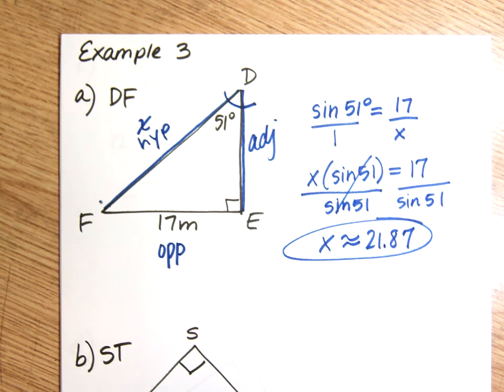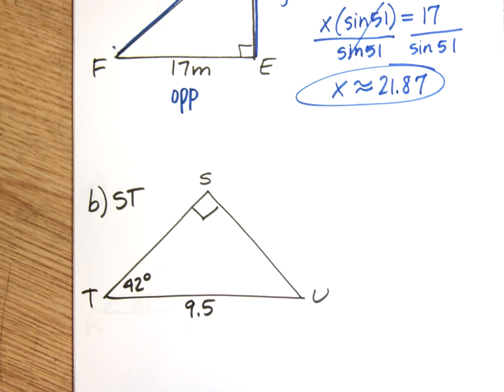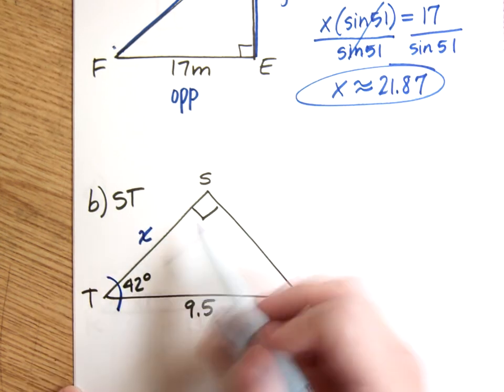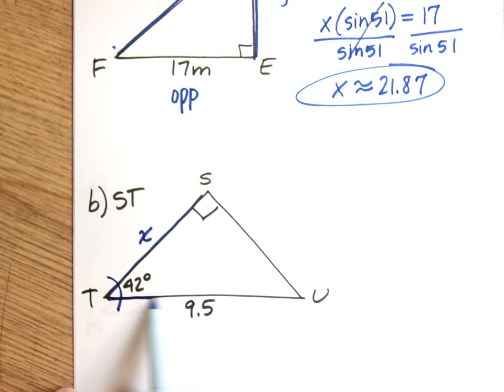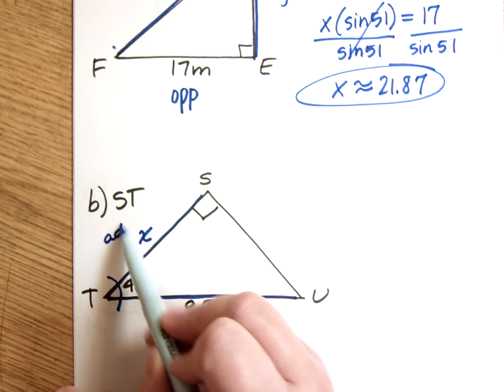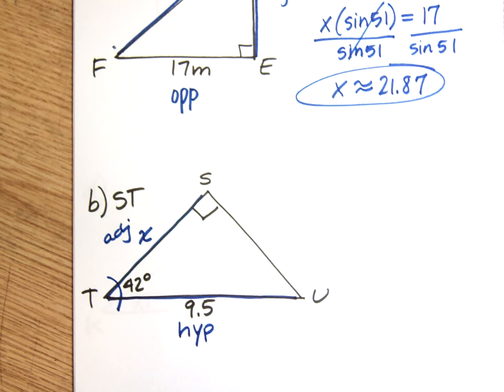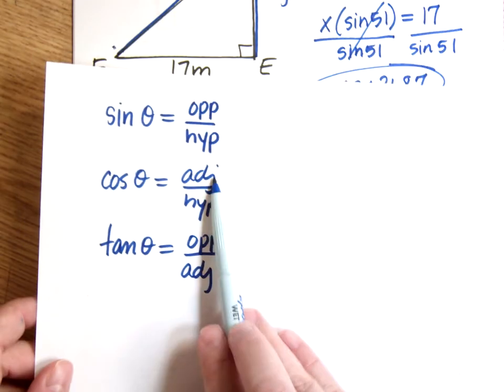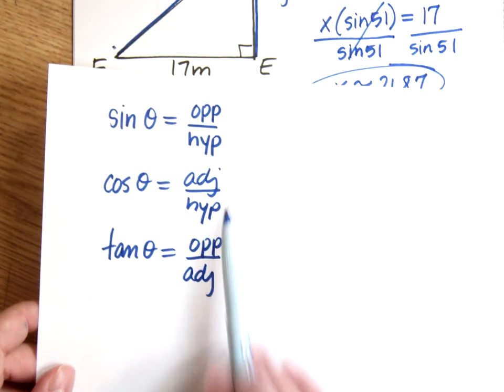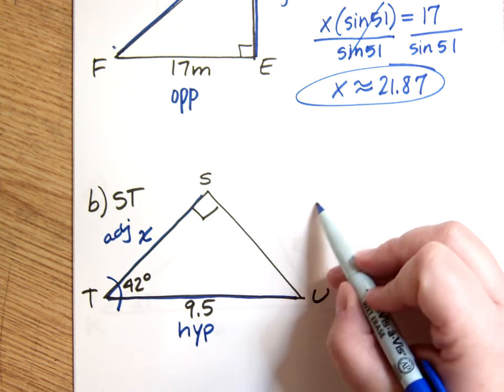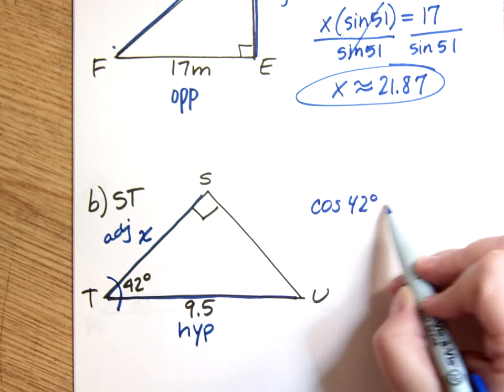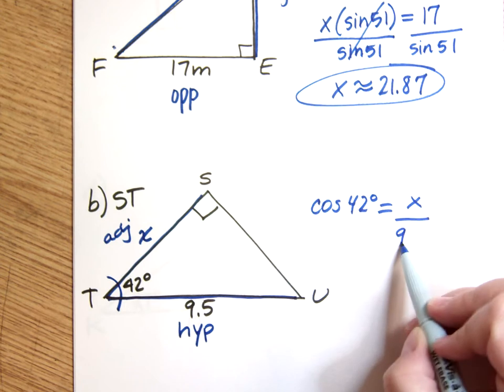Okay. Example B. ST. Okay. ST is right here. So that's going to be my X. This is the angle I'm using. It's made up of two sides. One of them is adjacent and one of them is hypotenuse. So first I'm going to figure out which one is hypotenuse. It's this one. It's across from the right angle. And that means this side must be the adjacent. So I'm going to be looking for the adjacent side using the hypotenuse. So I'm working with adjacent and hypotenuse. So that means I'm going to use cosine. So cosine of 42 degrees equals adjacent over hypotenuse.